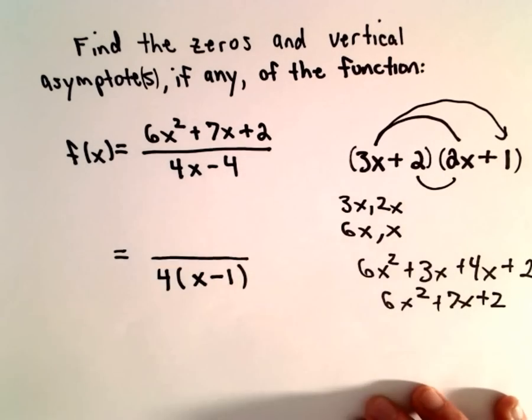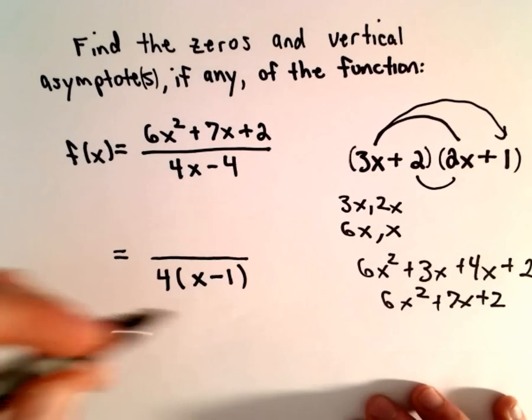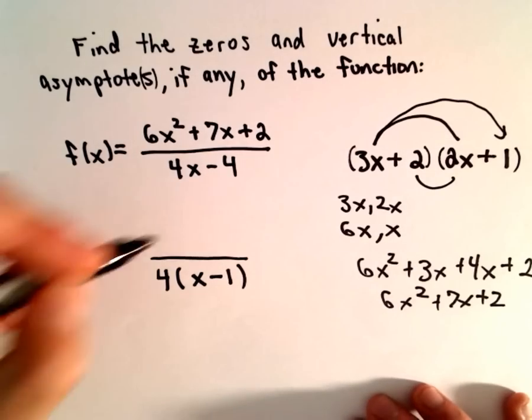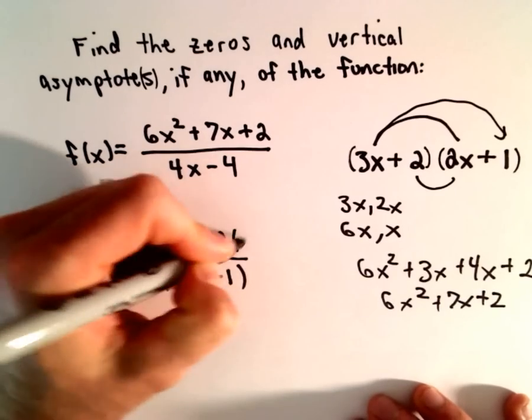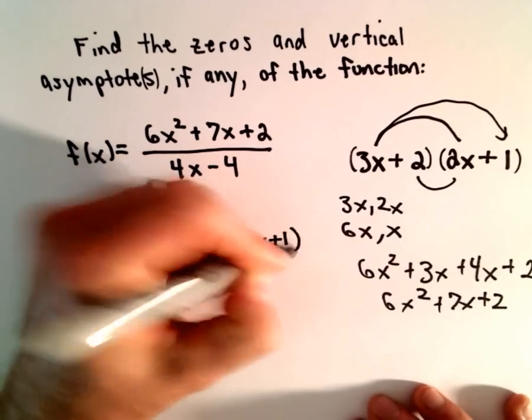I think I got a little lucky here and just picked the right ones first. So we've got 3x + 2 multiplied by 2x + 1 in the numerator.